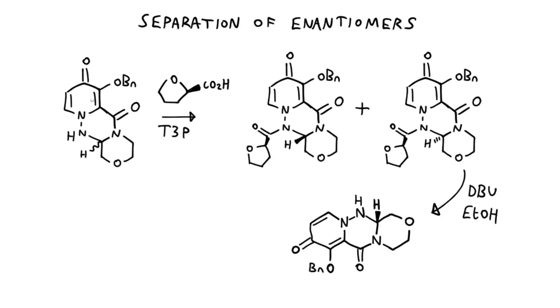Shionogi had to work out a way to resolve this and get the desired enantiomer. They accomplished this by coupling their racemic product with an enantiopure carboxylate—in this case tetrahydrofuran carboxylic acid. This gives a pair of diastereomers, and on a fairly large scale these were separable by differential crystallization. Then the auxiliary can be removed by hydrolysis with DBU and ethanol to afford the enantiopure building block.